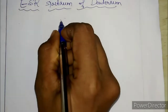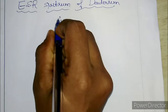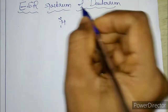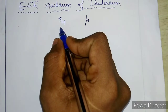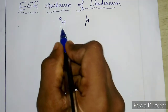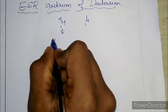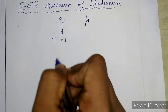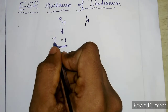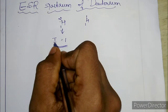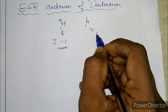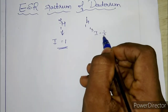Deuterium can be represented as ²H (or D). This is an isotope of hydrogen. We know that for deuterium the value of I is 1. I is nothing but the nuclear spin. For deuterium the nuclear spin value is 1, while for hydrogen the I value is 1/2.